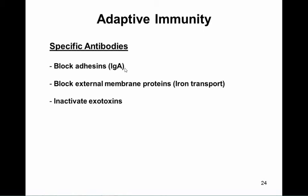Other antibodies can inactivate exotoxins — these won't prevent bacterial colonization but will prevent pathology. Finally, many antibodies help complement fixation and opsonization for phagocytosis; antibodies against capsule antigens are very important for this. In existing bacterial vaccines, the two major approaches are to induce capsule-specific antibodies for complement fixation and phagocytosis, and antibodies against toxins to prevent pathology.